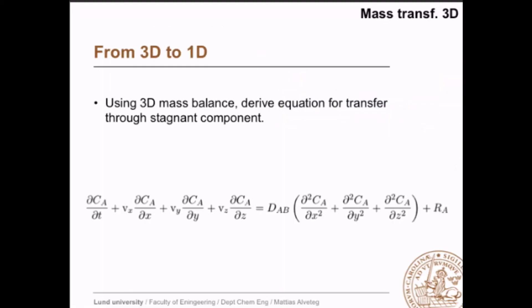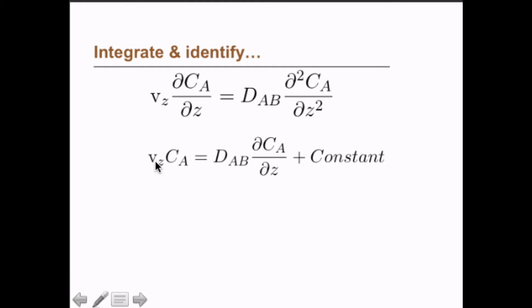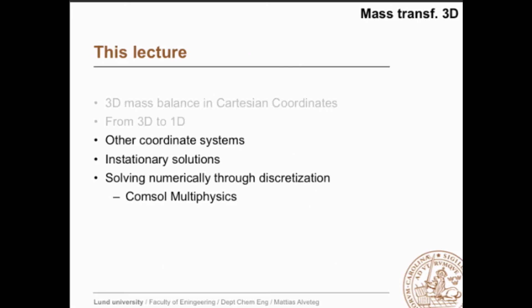So let's now look again at our 3D mass balance and simplify to one dimension. So we say that we have no reaction to start with, and everything that happens happens in the z-axis direction. So we take away what happens in the other directions, and we take the accumulation term to get steady state. So we have this equation here, and we can integrate that, and then we get an integration constant, and we have vc times cA, and we have the diffusivity times the concentration gradient. We can shuffle that around and say that the constant equals the diffusive flux plus the convective flux, but that we have seen before. We have seen before that NA equals the diffusive flux plus the convective flux. So that means that the physical interpretation of the integration constant in this case is actually the molar transport.